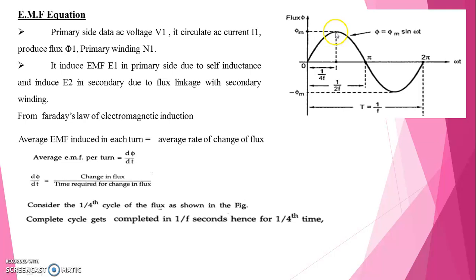We have to note at which duration maximum flux occurs, that is phi m. That occurs 1 by 4th of duration. The change in flux is from 0 to phi m.